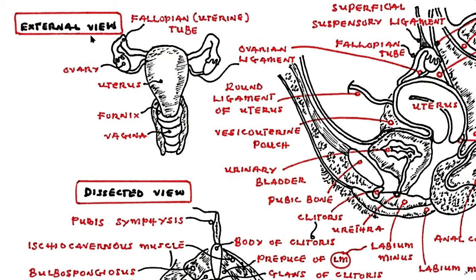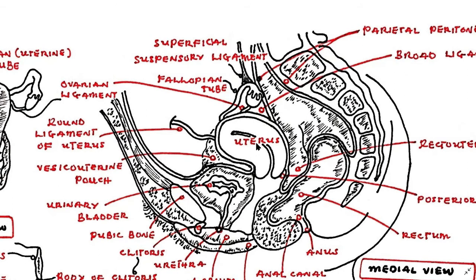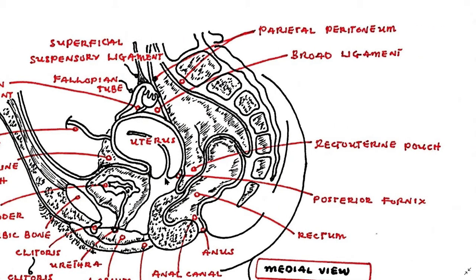The primary organ of the female reproductive system is the ovary, which produces the female germ cells or ova and secretes the hormones estrogen and progesterone. Each ovary arises on the posterior abdominal wall in the lumbar region during fetal development. During embryological development, the ovary's downward journey is interrupted by the round ligament and it is retained in the true pelvis. The uterus serves as a site for implantation and nourishment of the developing embryo or fetus. The cervical portion of the uterus sits into the vagina and forms a fornix on either side of the lower cervix. The uterine tubes provide a conduit for the newly fertilized or unfertilized ovum on its way into the uterus.